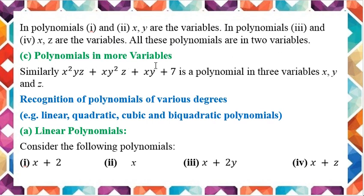Polynomial in more variables: if you have more than two variables, then simply you will say it is a polynomial with more variables. For example, x squared yz plus xy squared z plus xy plus 7. In this expression, three variables are involved: x, y and z. So it is a polynomial with three variables x, y and z.